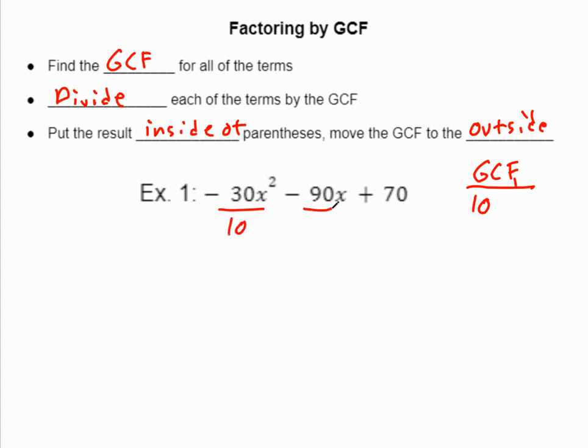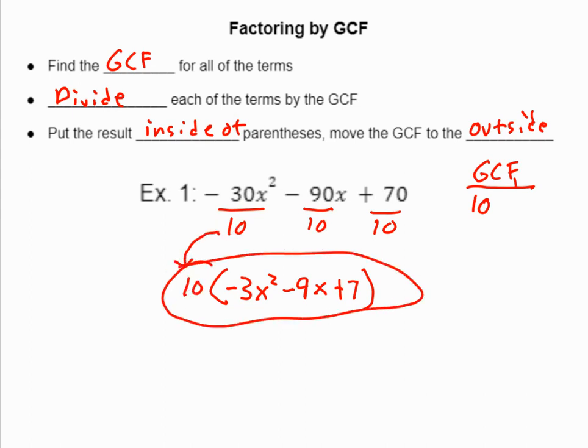So I'm going to divide all of these things by 10. Negative 30 divided by 10 is negative 3. Nothing happens to x squared. Negative 90 divided by 10 is negative 9. Nothing happens to x. And 70 divided by 10 is 7. And then for my last step, I put these inside some parentheses, and I take my GCF, and it goes on the outside. And that's my answer. 10 times negative 3x squared minus 9x plus 7.